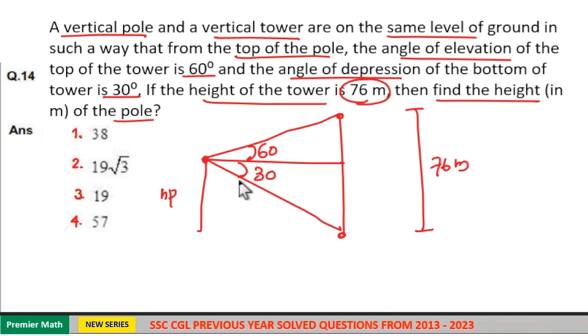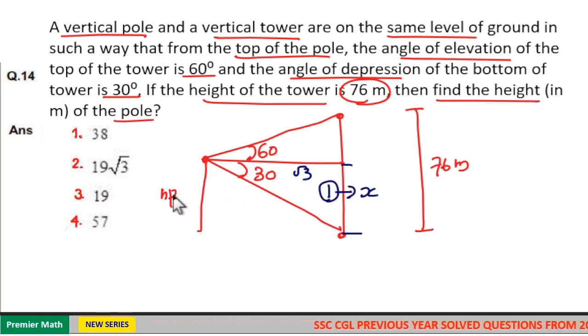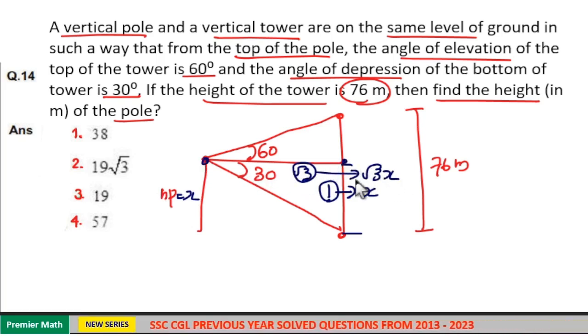Now from the lower triangle, tan of 30 is equal to 1 by root 3, that is opposite side and adjacent side having the ratio 1 is to root 3. If I take one part as x meters, that is the height of the pole is considered as x meters, then the root 3 part is equal to root 3 x meters, and the horizontal distance is root 3 x from this lower triangle.